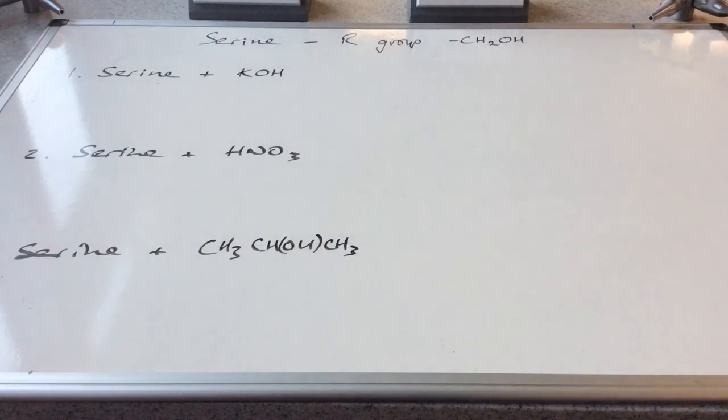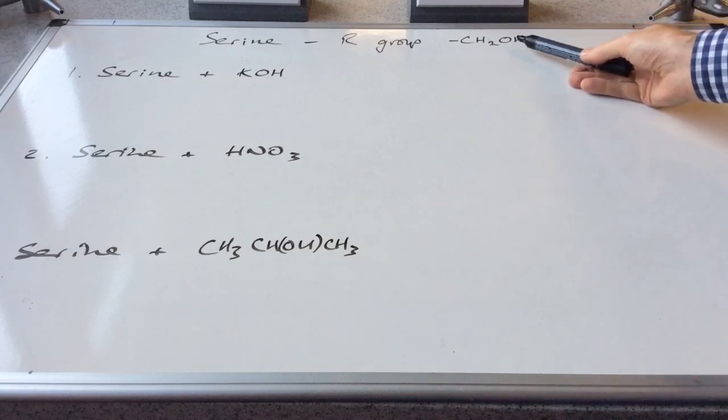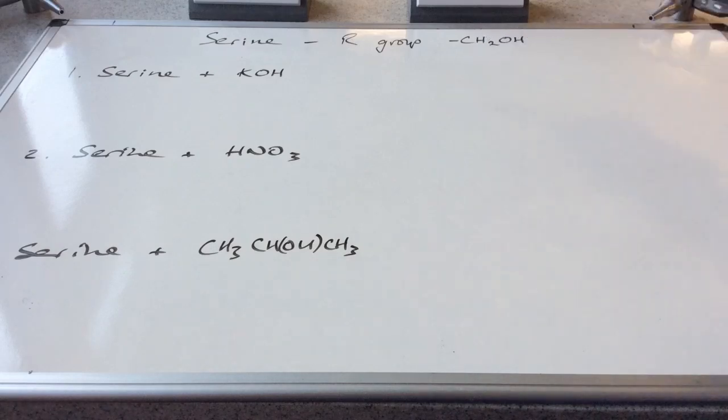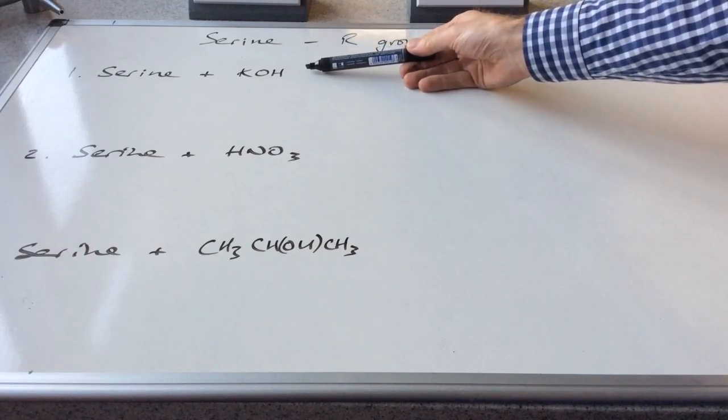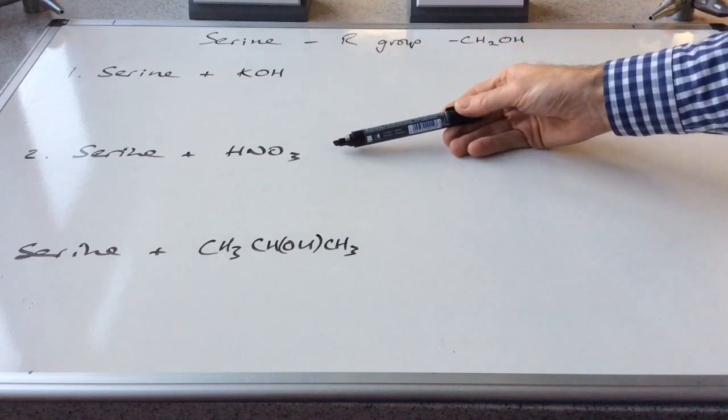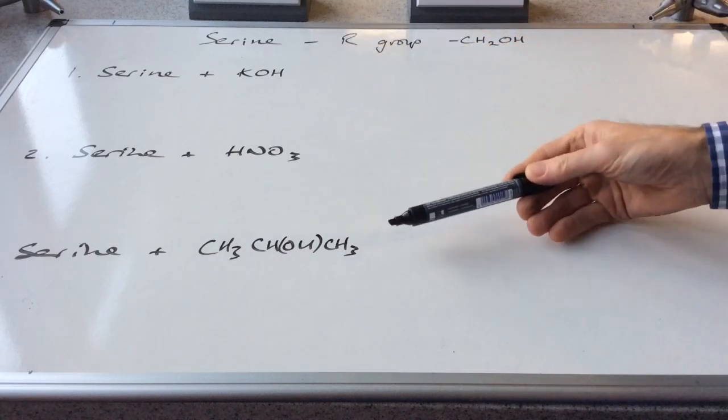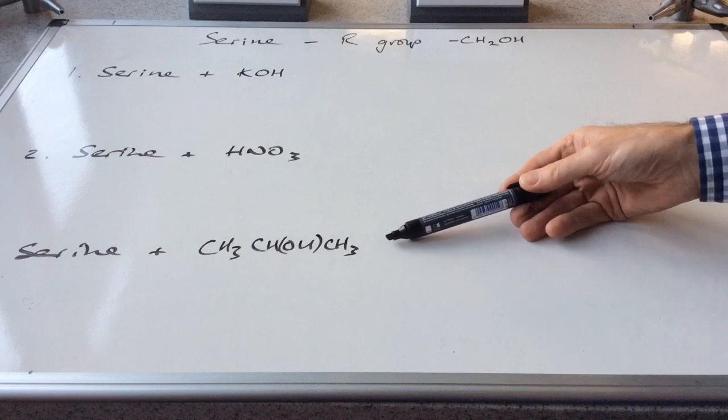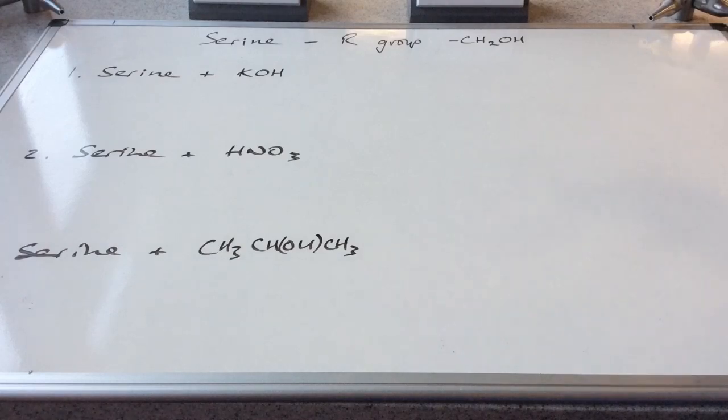So we'll finish the video with this. I've got the amino acid serine, and I'm telling you that the R group is CH2OH. So can you have a go at writing the formula or the structure of the product of the reaction of serine with potassium hydroxide, serine with nitric acid, and serine with propan-2-ol. So if you have a go at that, pause the video, and then I'll go through the answers.